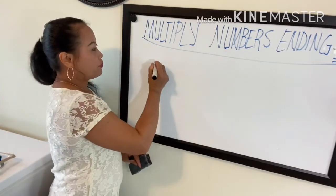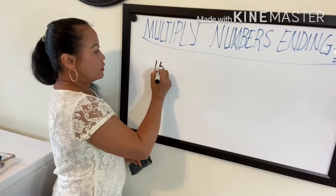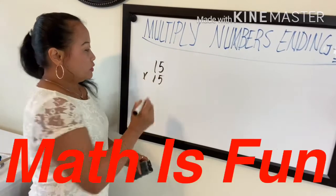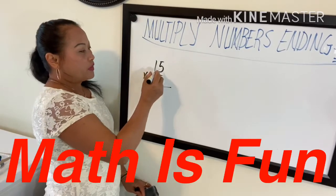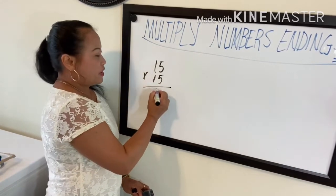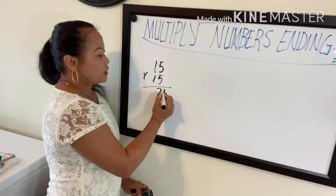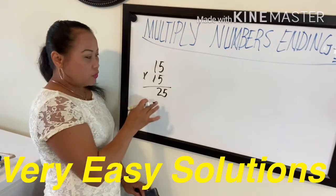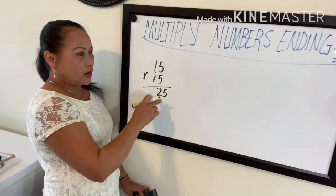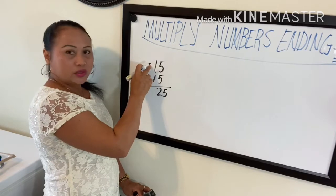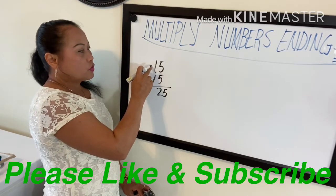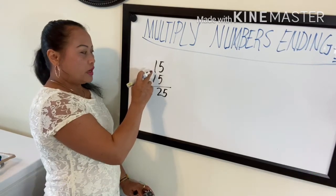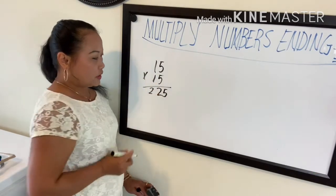For example, 15 times 15. Five times five is 25, so you just bring down 25 — we don't need to carry. Instead, we just add one to the first number, so one plus one is two, and then two times one is two. The answer is 225.